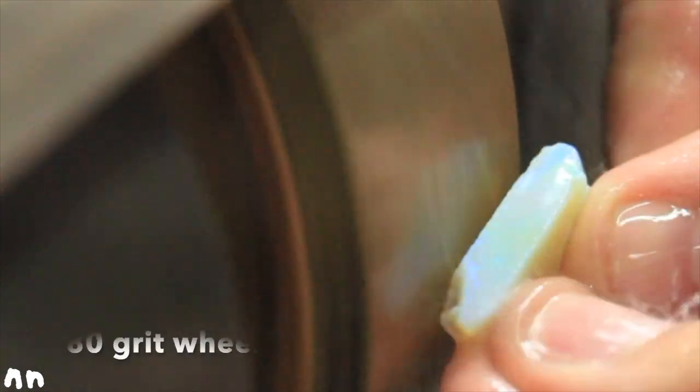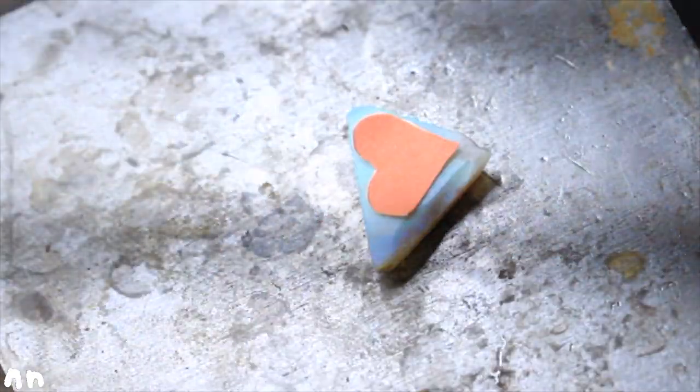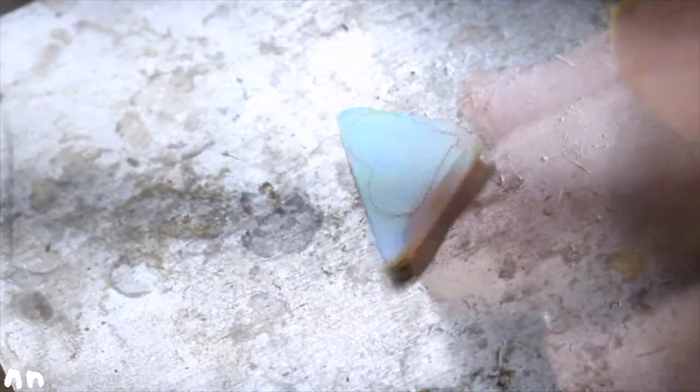Now we'll grind both sides flat enough so that you can trace your heart pattern on it. Now draw your heart design onto your opal.